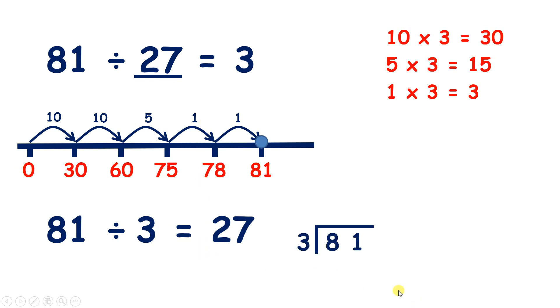So if we use short division, 8 divided by 3 is 2, remainder 2, and then 21 divided by 3 is 7. So that gives us our missing number, 27.